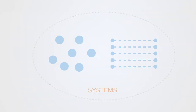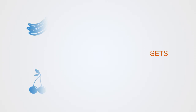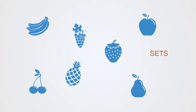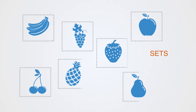We can contrast a system with a set, where a set consists of a group of independent elements such as a bowl of fruit. If we changed one of the fruit, this would not affect any of the others, because the variables associated with each element are independent.